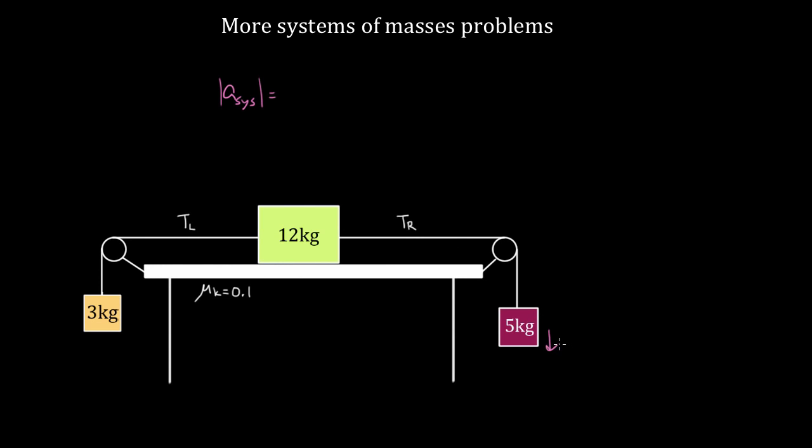All these boxes will accelerate with the same magnitude. Some may have negative accelerations. Some may have positive accelerations, like these. But they're gonna all have the same magnitude of acceleration, because we're gonna assume that these ropes don't break. And if they broke, then there'll be different magnitudes, or if they stretch, but we're assuming that doesn't happen.